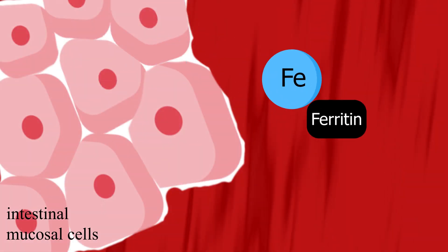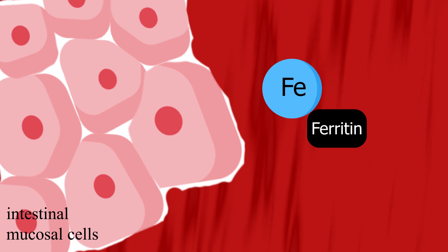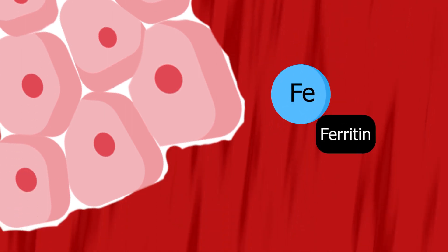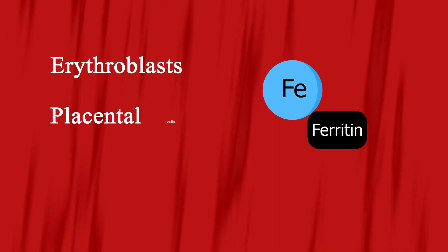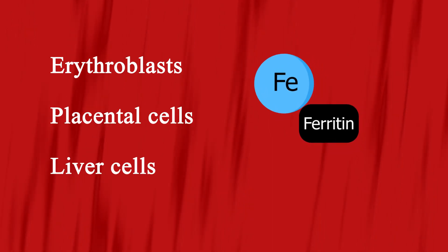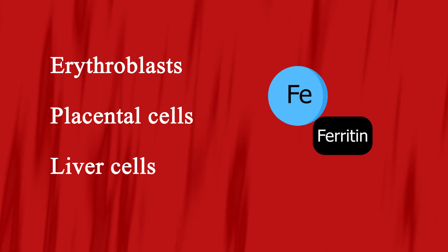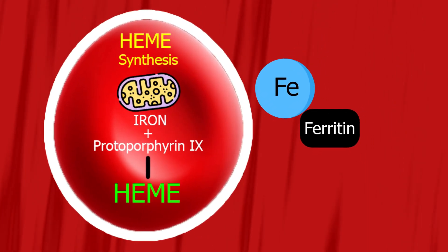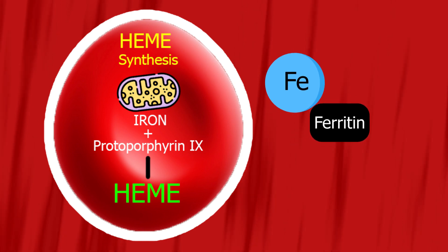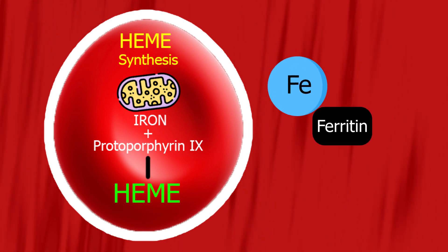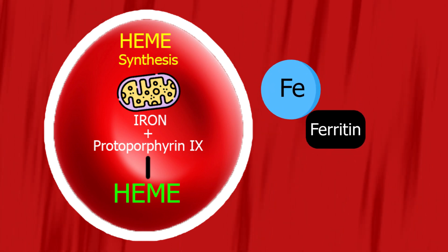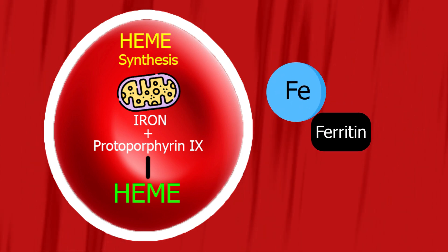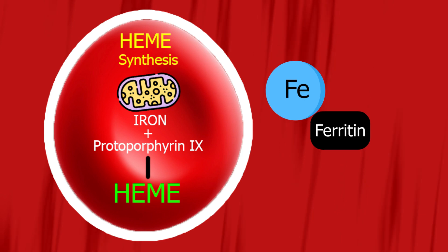Iron from intestinal mucosal cells is transferred to transferrin, an iron transport protein synthesized in the liver. Transferrin can transport iron from intestinal cells to specific receptors on erythroblasts, placental cells, and liver cells for heme synthesis. Transferrin transports iron to the erythroblast mitochondria, which inserts the iron into protoporphyrin 9 for it to become heme. Synthesis of transferrin increases with iron deficiency but decreases with any type of chronic disease.